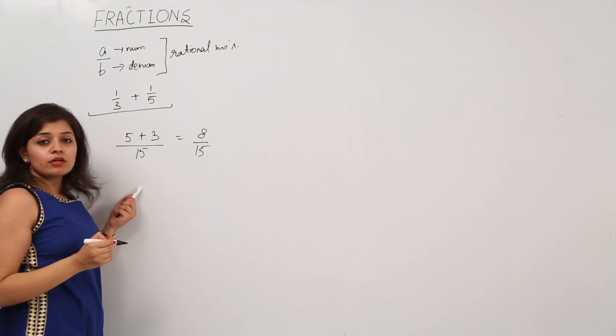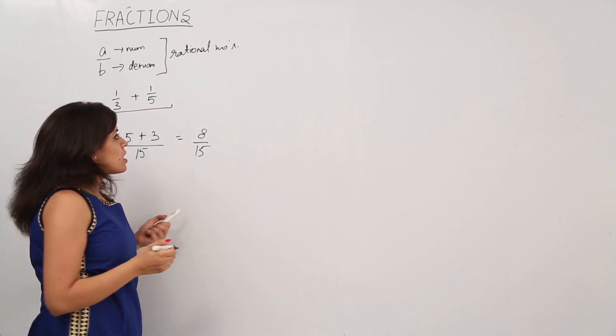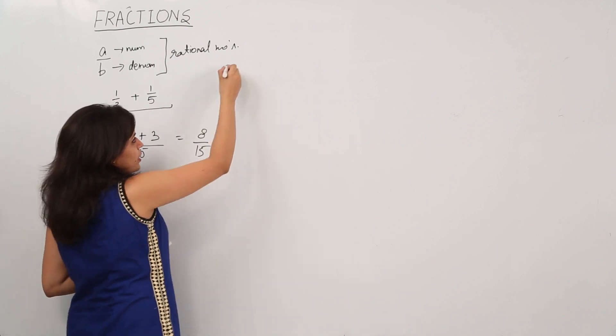This is how we add 2 rational numbers, and in the same way we can subtract 2 rational numbers. Now if we have to multiply 2 rational numbers.